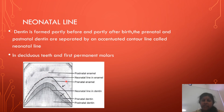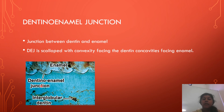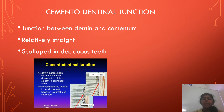Next is the neonatal line. Dentine is formed partially before birth — called prenatal dentine — and partially after birth — called postnatal dentine. These are separated by an accentuated contour line called the neonatal line, seen in deciduous teeth and in first permanent molars. The dentino-enamel junction is the junction between dentine and enamel. The DEJ is scalloped with its convexity facing towards dentine and concavity facing towards enamel. The cemento-dentinal junction is the junction between dentine and cementum; it is relatively straight in permanent teeth and scalloped in deciduous teeth.